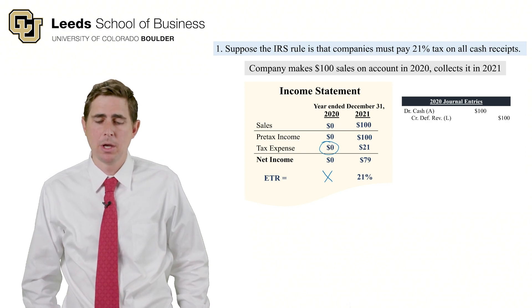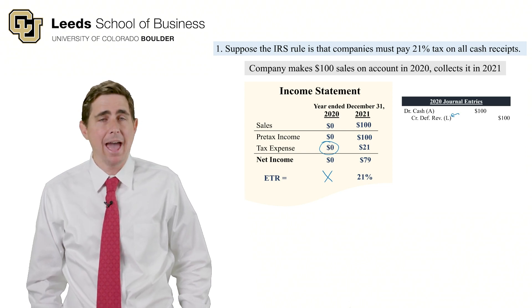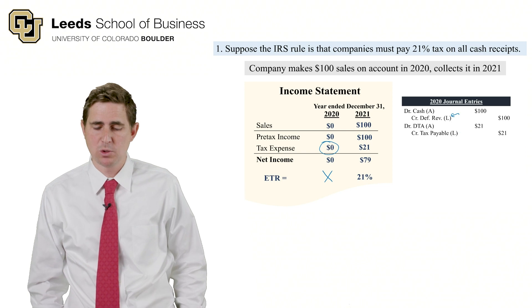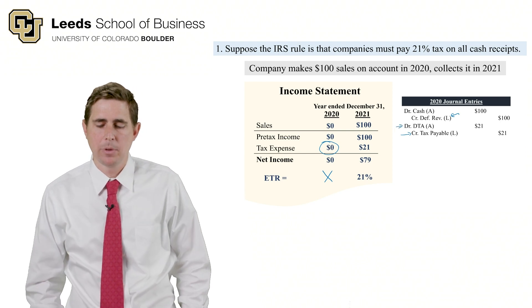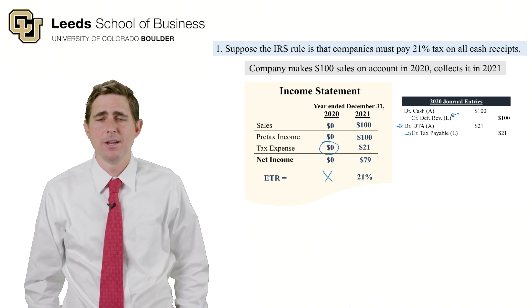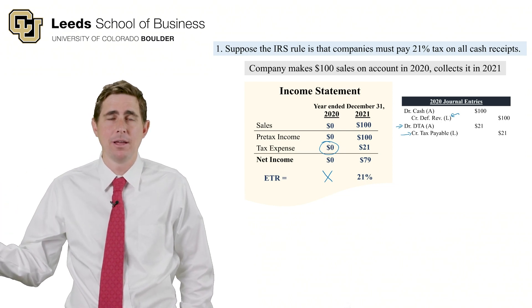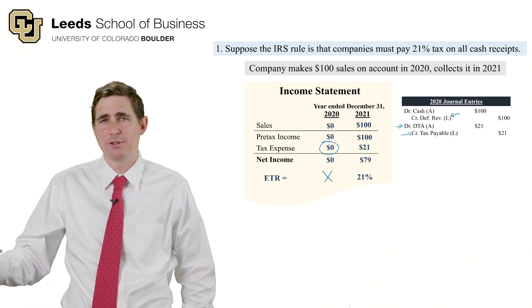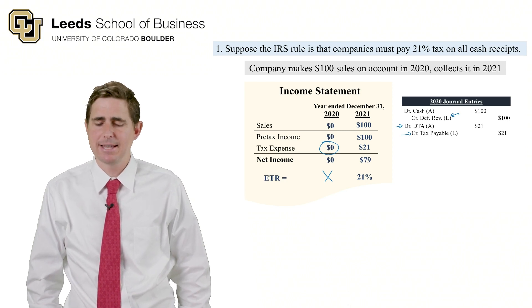In 2020, we received cash for the gift card: debit Cash, credit Deferred Revenue for $100. We also have to pay tax, so we credit Taxes Payable, but we don't debit Tax Expense — that would be misleading. Instead, we debit a Deferred Tax Asset for $21. The nature of this asset is that we're pre-paying an expense we'll recognize in the future — we get to record an expense next year without having to pay for it then.